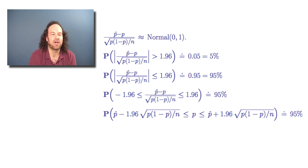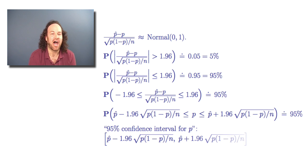Now this is what we will call a 95% confidence interval. We're saying that we're 95% confident that the true unknown value of p is somewhere in this interval.